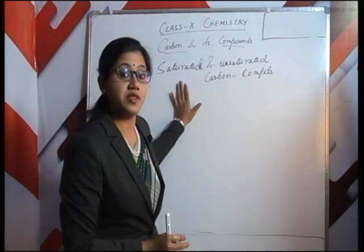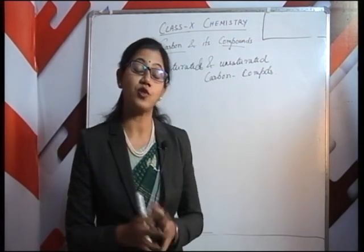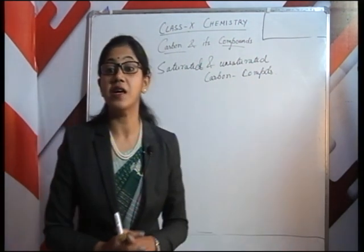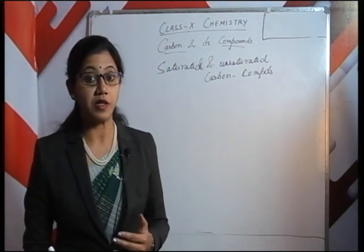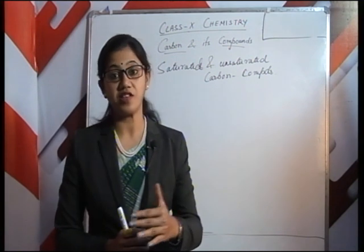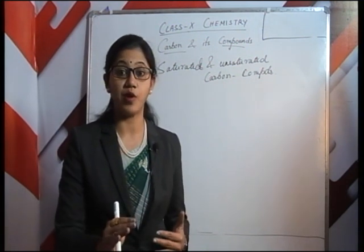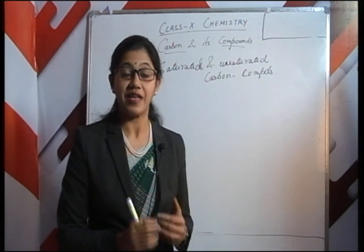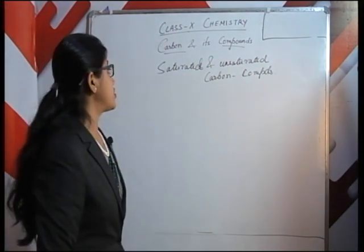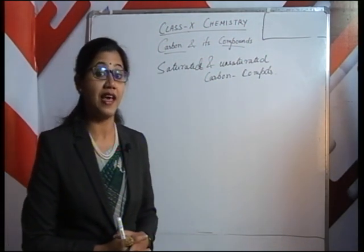Saturated hydrocarbons or saturated carbon compounds means carbon will have all single bonds, and those bonds will be saturated with hydrogen. Whereas unsaturated carbon compounds means carbon might have a double bond or a triple bond. Saturated compounds have all single bonds; unsaturated ones have double or triple bonds that can be broken into single bonds by accepting hydrogen atoms. Under saturated hydrocarbons we have alkanes, and under unsaturated hydrocarbons we have alkenes and alkynes.